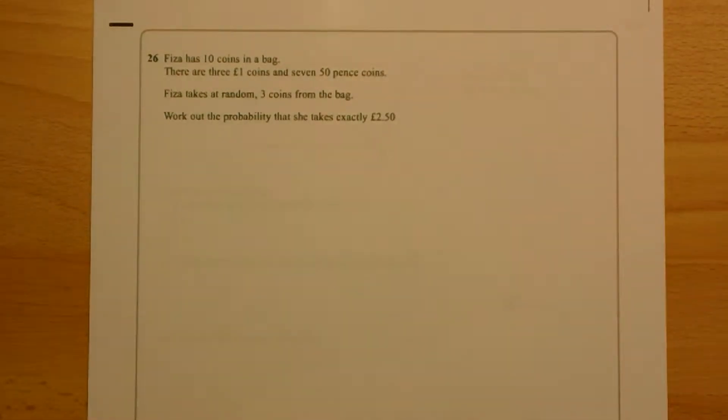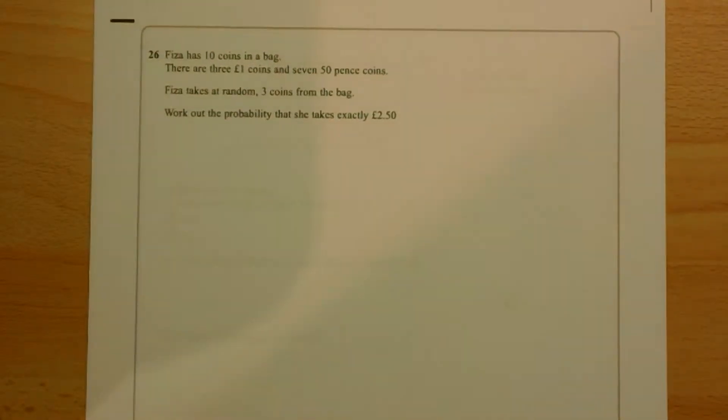Question 26. 10 coins in a bag, 3 are £1 coins and 7 are 50 pence pieces. We take out 3 coins at random, what's the probability that we take out exactly £2.50?